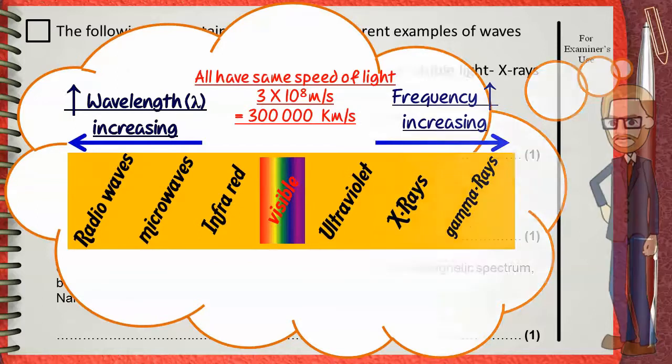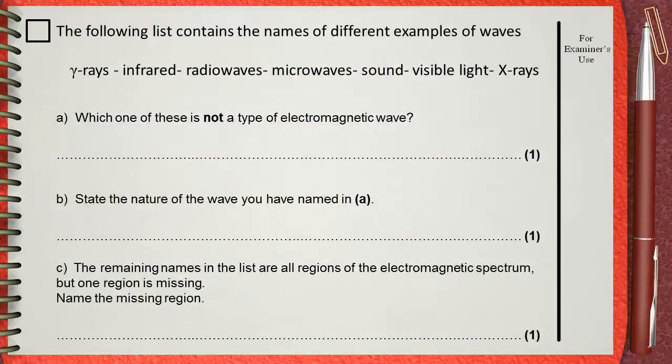Let's go back to our direct questions. A. Which one of these is not a type of electromagnetic wave? Of course, it's sound. Sound is not an electromagnetic wave.